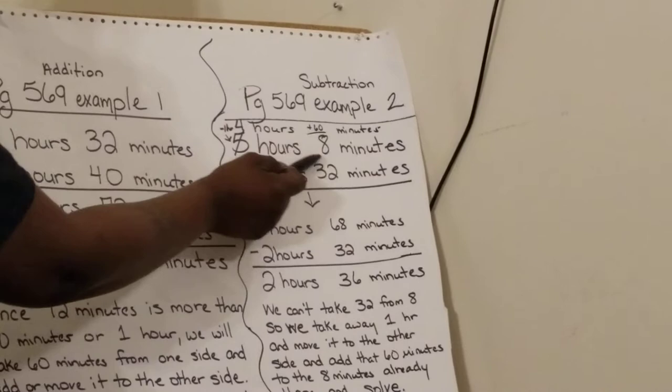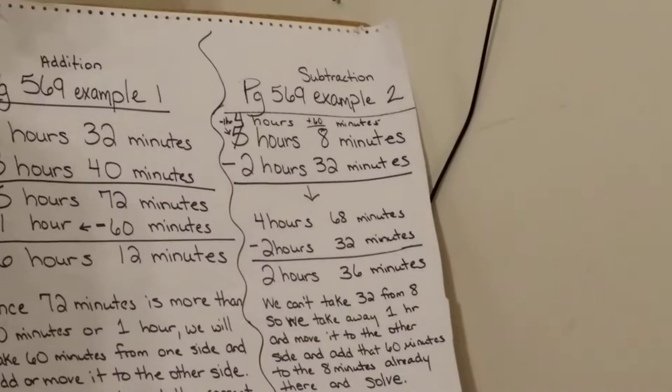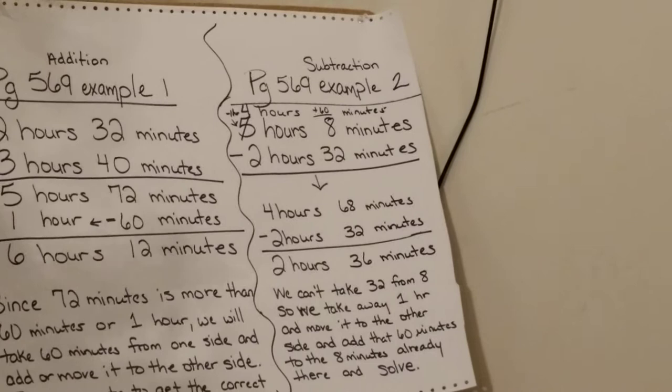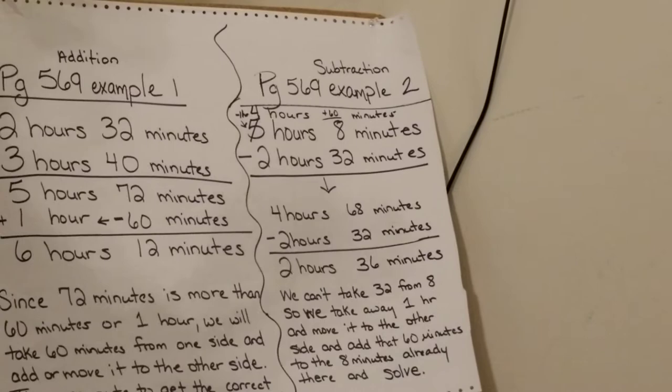From there I can just do simple subtraction. 4 minus 2 is 2, and 68 minus 32 is 36. So my answer would be 2 hours 36 minutes.